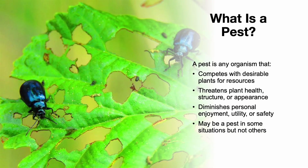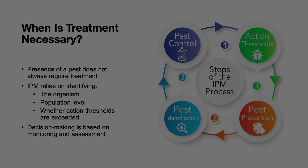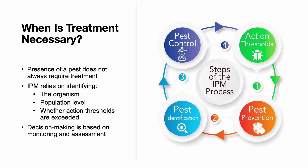What is a pest? In a managed landscape, a pest is any organism that interferes with plant health or human use of the space. That might mean an insect feeding on tree leaves, a weed out-competing desirable plants, or a fungus damaging turf. But not every pest needs to be controlled. Context matters — what's considered a pest in one setting may not be in another. IPM doesn't encourage treating every pest you see; instead, it emphasizes monitoring.